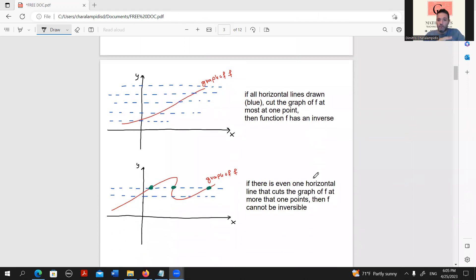Let's see what the horizontal line test suggests. Given a graph, the red one here, if all horizontal lines drawn, the blue ones, cut the graph of f at most at one point, then indeed that graph, that function is inversible. There is an inverse function.